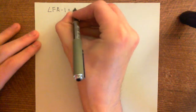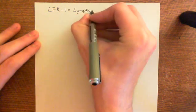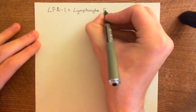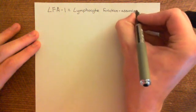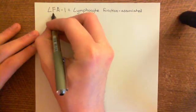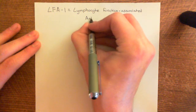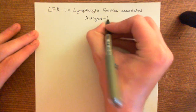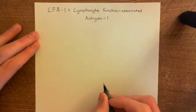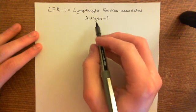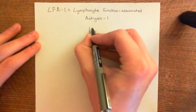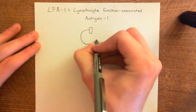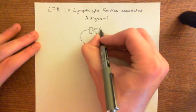LFA-1 stands for lymphocyte function-associated antigen 1. L is for lymphocyte, F is for function-associated, and A is for antigen 1. This integrin is found on the surface of many leukocytes; here we'll discuss it on the surface of monocytes circulating in the blood.